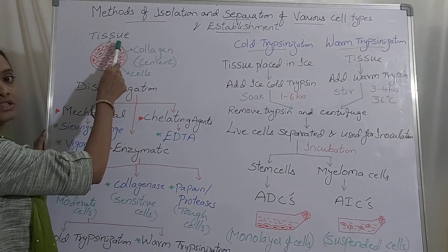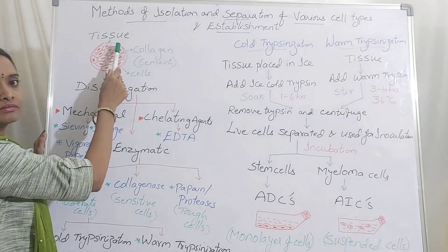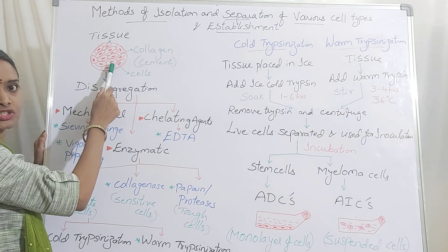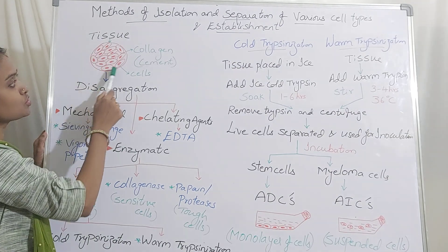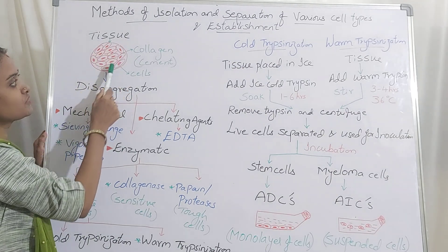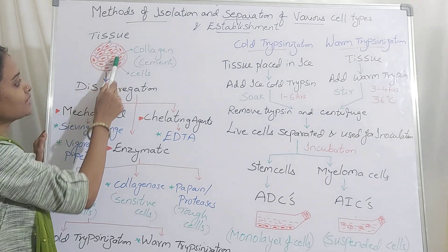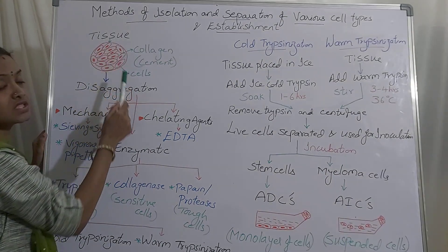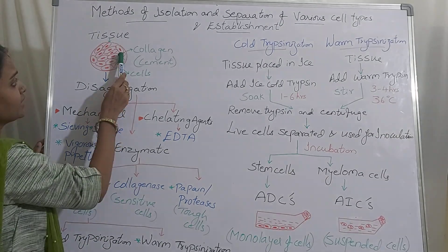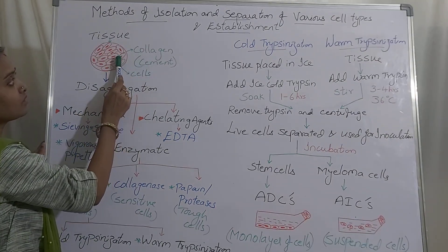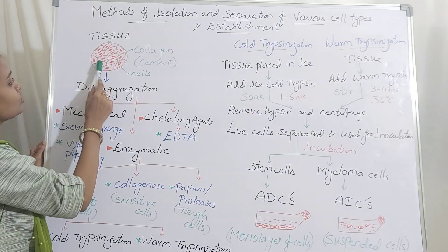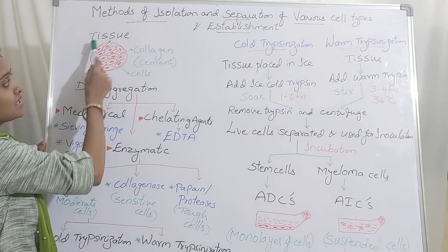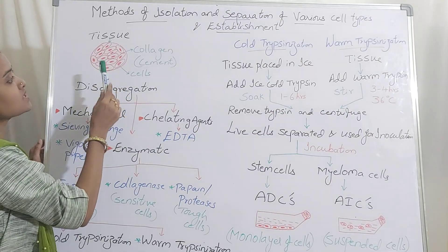If you are taking any tissue, select some organ, and from that organ you are going to take a small piece of tissue. Tissue is defined as a group of cells which are compactly packed. Collagen is a substance which is holding all the cells together — it is like a cement for all the cells. So you have a compact cell which is a tissue, and you have to separate this.